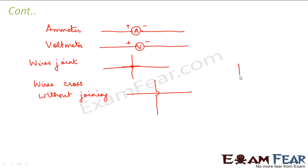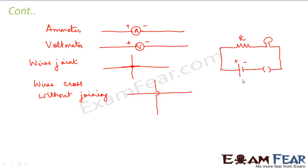So how do we draw that circuit? First I have a battery or a cell — this is the positive terminal, this is the negative. This is connected to a resistance R, which in turn is connected to a bulb, and then there is a switch. As long as the key is open there will be no current flowing, so the bulb will not glow. As soon as you close the switch and switch it on, the bulb starts glowing. This is how we draw circuits using the conventional symbols.